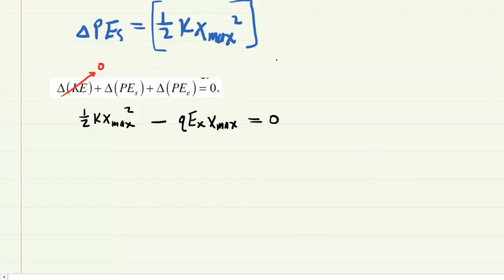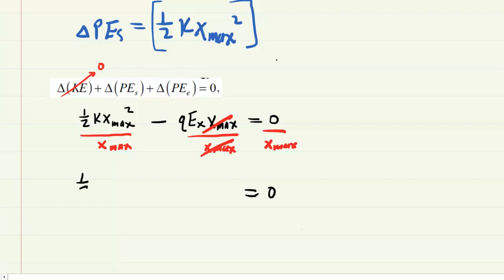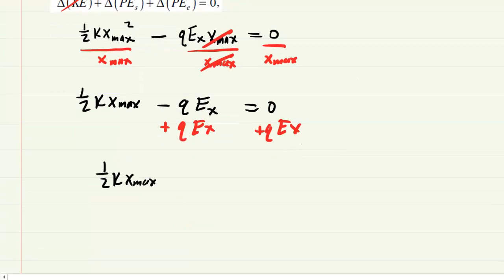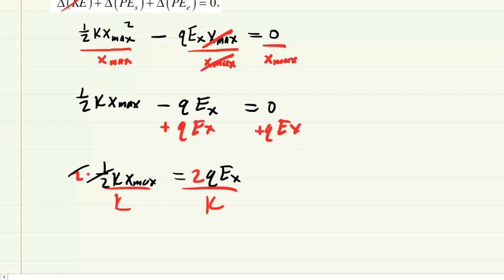Now let's solve for x_max. We divide each term by x_max, including the right-hand side which remains zero. The left-hand side becomes one-half k times x_max — no longer x_max squared — minus Q times E_x. Adding Q E_x to the other side gives one-half k x_max equals Q times E_x. Multiplying both sides by two cancels the one-half, and dividing both sides by k gives us the expression for x_max.